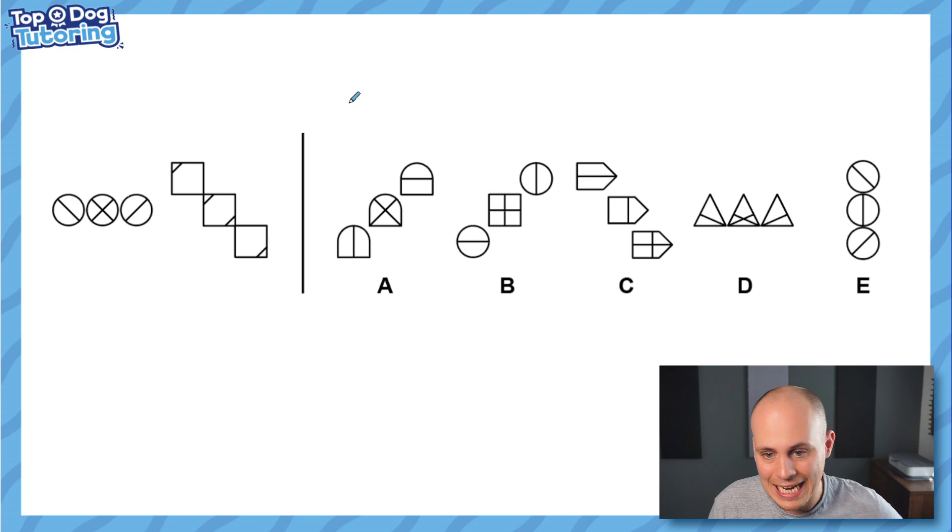Okay did you solve it let's see so what do we need here so it doesn't matter what shape it is but it does matter that all three of the shapes are the same so I'm going to get rid of B because it goes circle square circle silly answer trap answer we get rid of it.